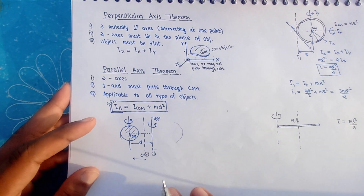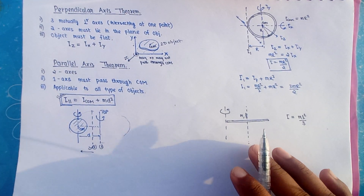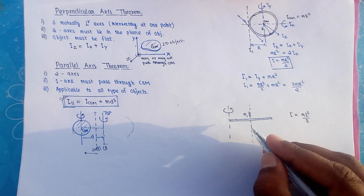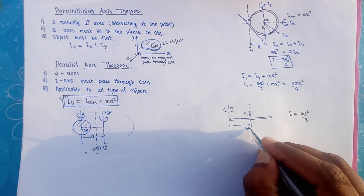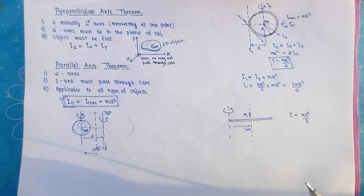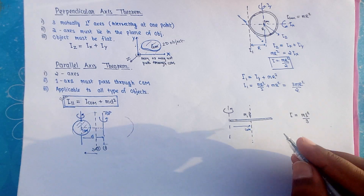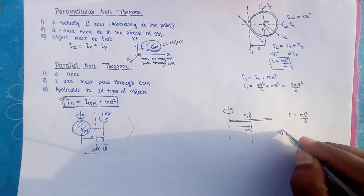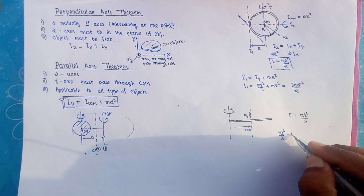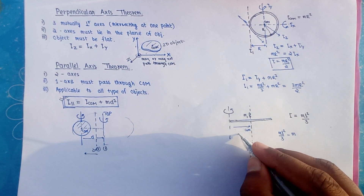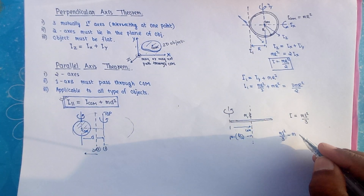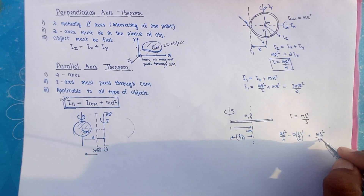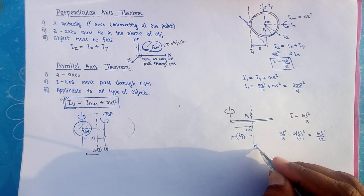Using the intuition from the parallel axis theorem: I know the moment of inertia about the end is M L squared divided by 3. I am now moving towards the center of mass, so it will be easier to rotate — meaning moment of inertia will decrease. The distance from the end to the center of mass is L divided by 2. So: I_cm equals M L squared divided by 3, minus M times (L/2) squared, which equals M L squared divided by 12.